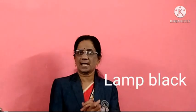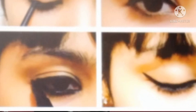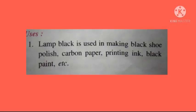The next amorphous form of carbon is lamp black. When oil burns with a sooty flame, it produces large amounts of carbon. This black smoke is collected as a black powder over damp blankets kept inside chambers. The collected powder is called lamp black — it is a light black powder used in our country to prepare eyeliner, also called kajal. Lamp black is used in making black shoe polish, carbon paper, printing ink, and black paint.